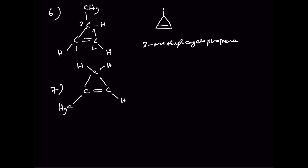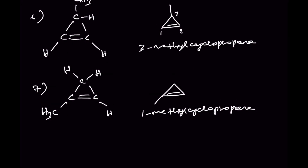Number seven: we can bring the methyl group down to the 1-position, giving another structure. The same in bond line notation — this is 1-methylcyclopropene.